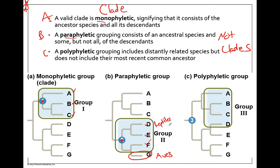To make reptiles a clade, we have to also involve birds, which are descendants of dinosaurs. A polyphyletic grouping is slightly different — it includes the descendants of a group but does not include the most recent common ancestor.